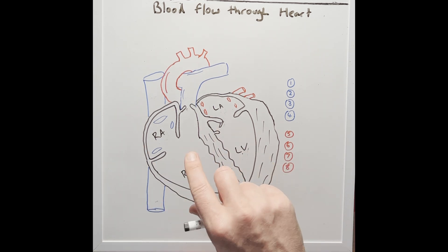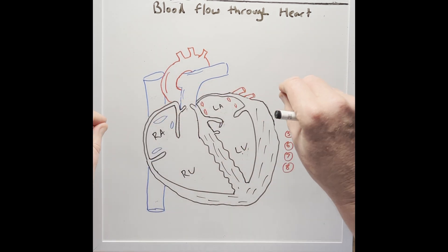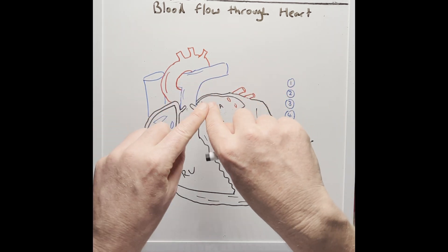So the heart pumps blood in two closed circuits. The first one is the systemic circuit, which takes blood to the body and returns it back from the body to the heart. The second circuit is the pulmonary circuit, which takes blood to the lungs to be oxygenated and returns it from the lungs back to the heart.